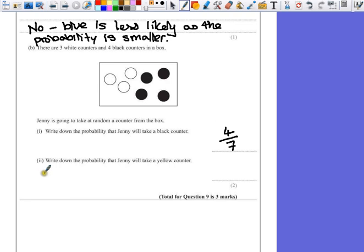Part 2 says write down the probability that Jenny will take a yellow counter. There are no yellow counters in the box, so the probability is 0. This can also be given as 0 over 7. Either answer would do.